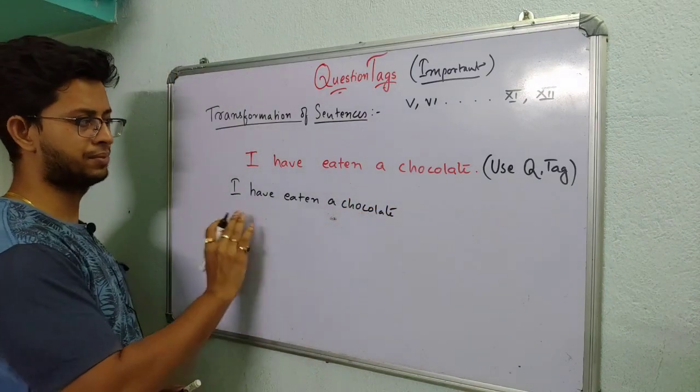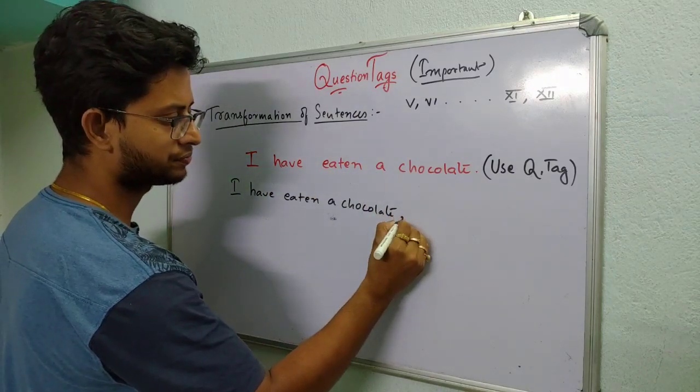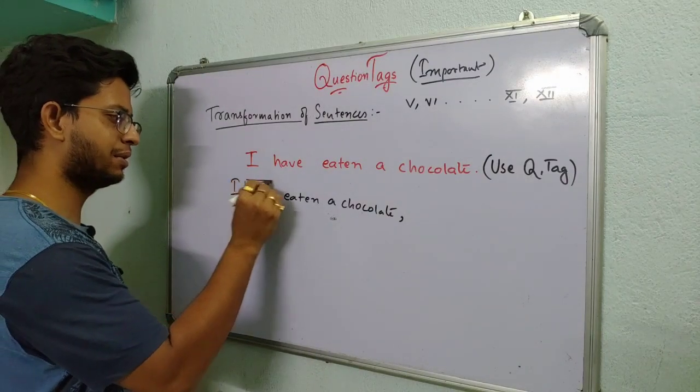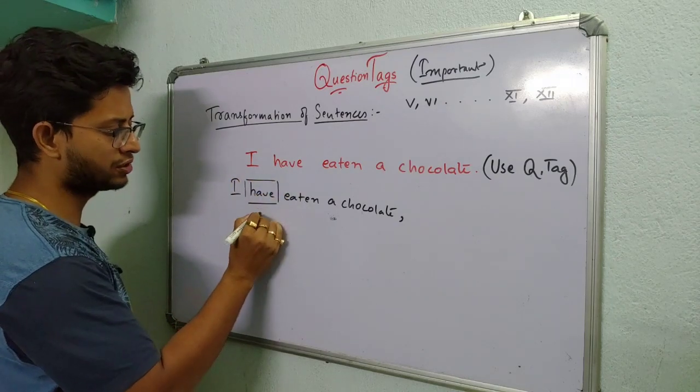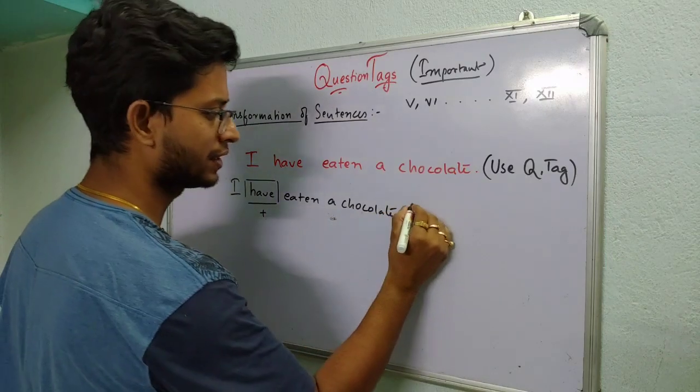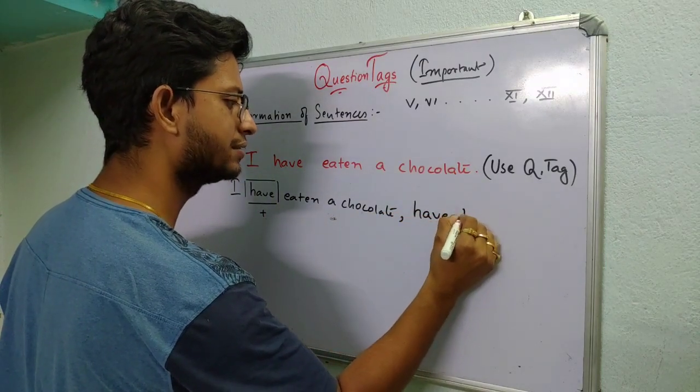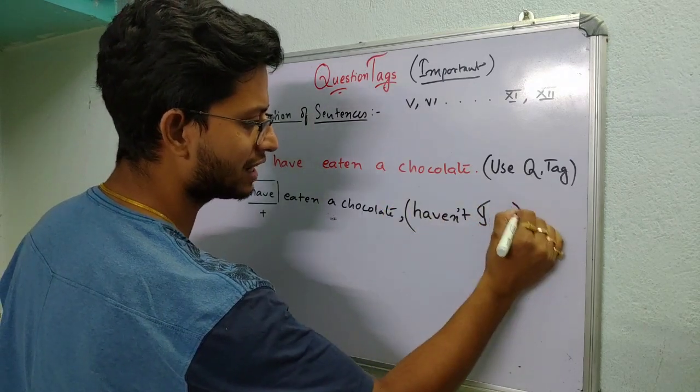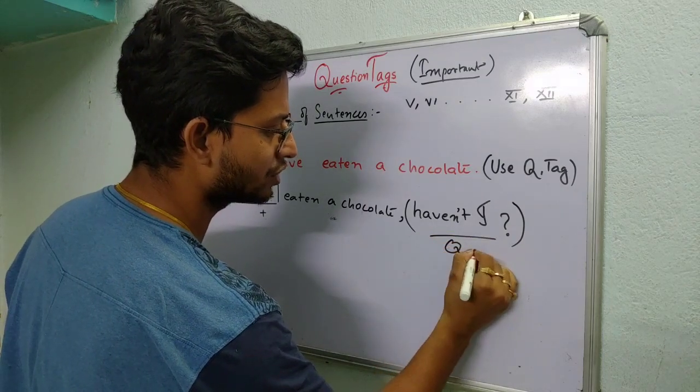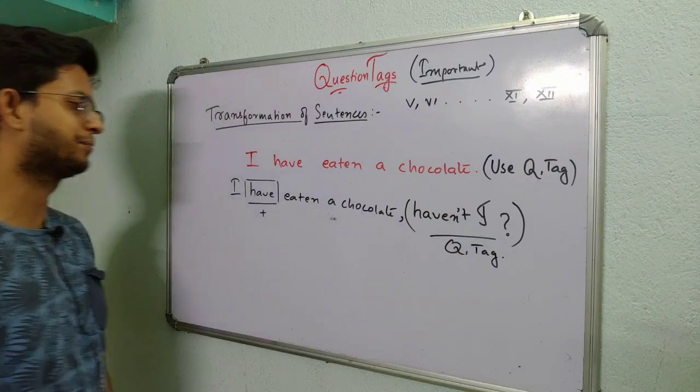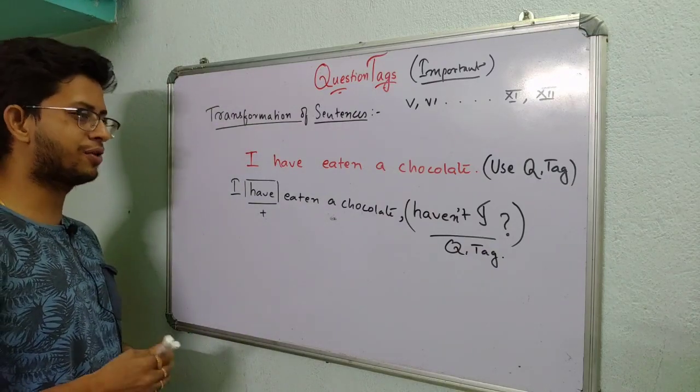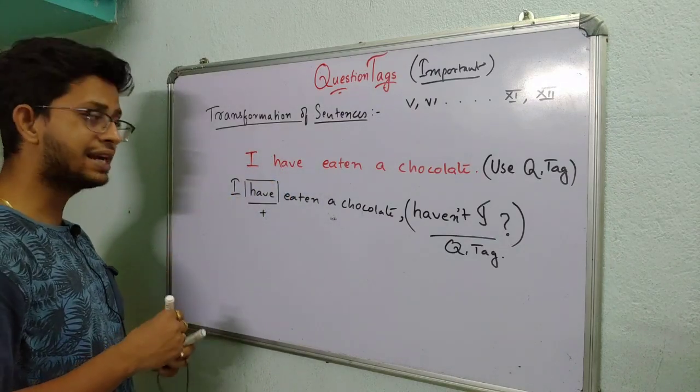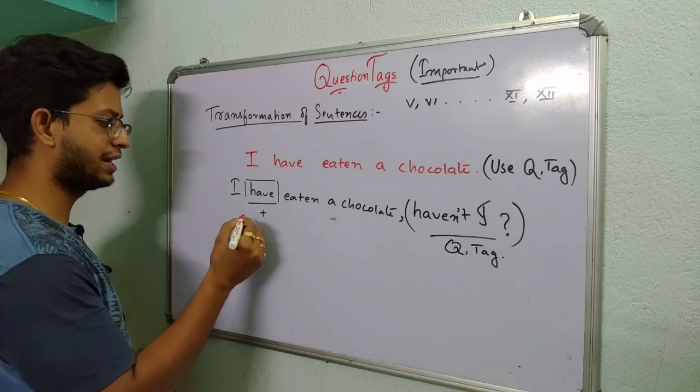First step. Then write haven't I with a question mark at the end. So we are writing haven't I with question mark at the last. This is actually a question tag. So what is the formula for doing this? The formula is that you have to see whether the helping verb in the sentence is in positive or negative form.